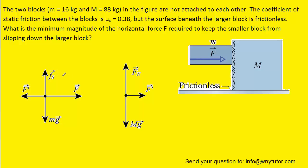We recall that the static frictional force equals the coefficient of static friction multiplied by the normal force. In this case we must be careful: for the block labeled lowercase m there isn't a normal force in the usual sense, since the smaller mass is not touching the ground. However, the larger block pushing against the smaller block with the reaction force effectively acts as a normal force, so we can use the reaction force F prime in its place.